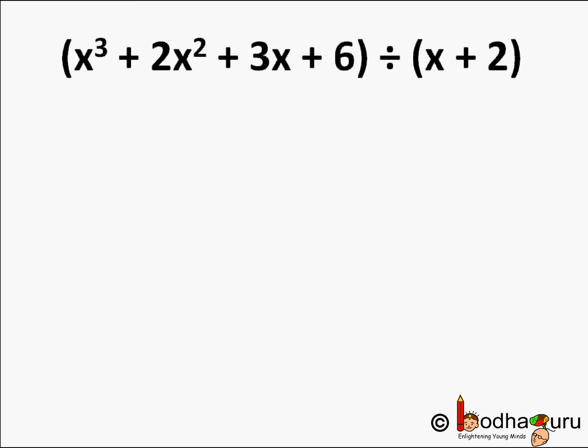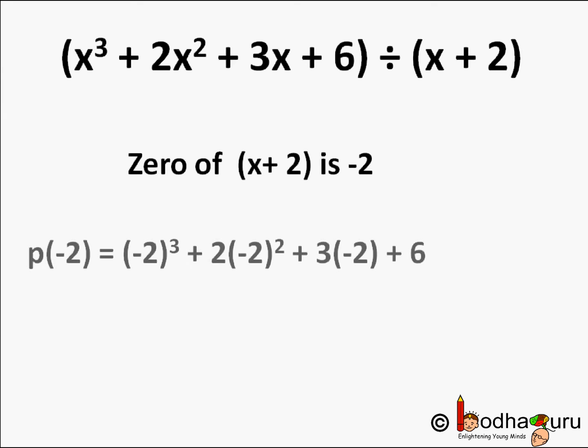The zero of the divisor (x + 2) is -2, since x + 2 = 0 gives x = -2. So we put -2 as the value in the polynomial x³ + 2x² + 3x + 6 and see if we get 0. So p(-2) = (-2)³ + 2(-2)² + 3(-2) + 6.